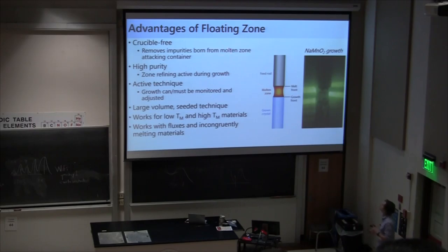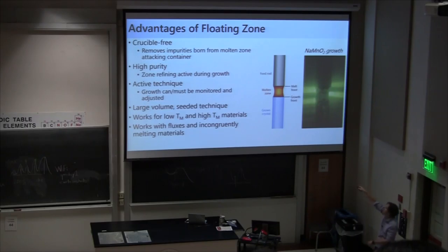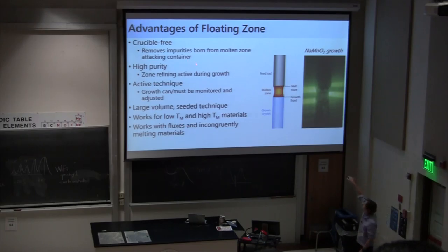So what are the advantages of floating zone? First, it's crucible-free. The molten zone attacking whatever container it's in — you can remove that degree of freedom. That was the original advance when they first made semiconductor-grade silicon. They had been trying the Czochralski growth, but it wasn't working because they were picking up contaminants from the crucible. So you can basically remove that degree of uncertainty.